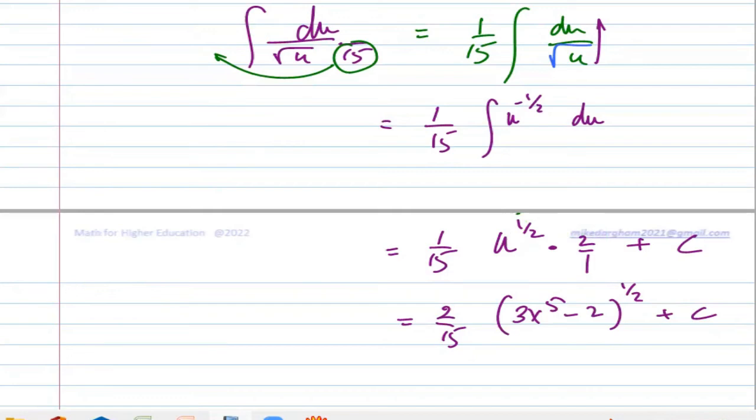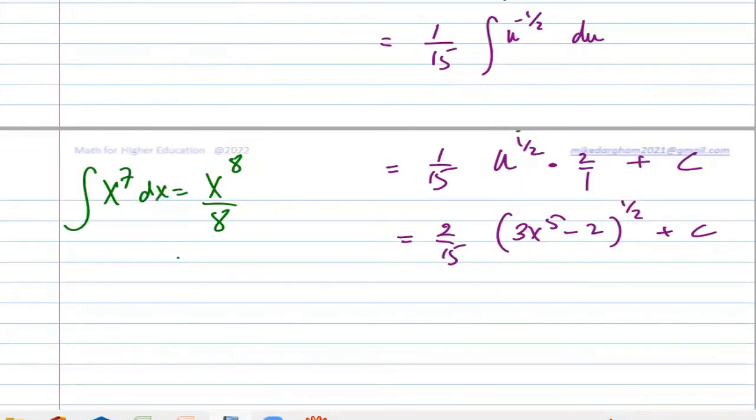When I say integral of x to the seven, what do you get? You get x to the eight over eight. This is properly written, but if you have a fraction—imagine I am integrating x to the half. What do you do? You add a one to the half, you get three over two. Now that should be written, but teachers ask you to continue simplifying. They won't give you full mark unless you write it properly.